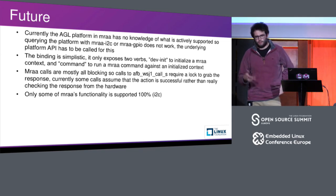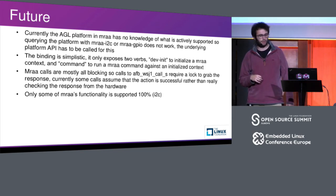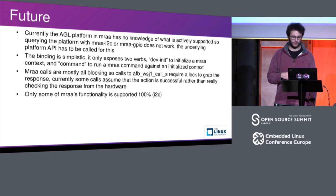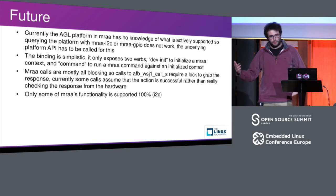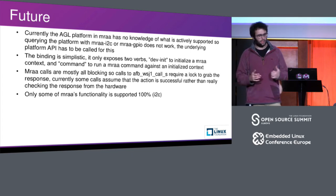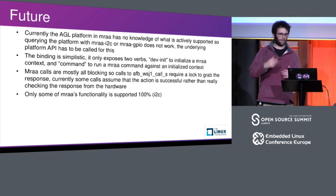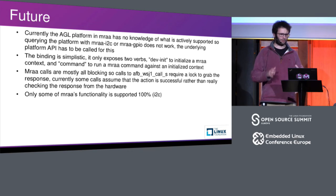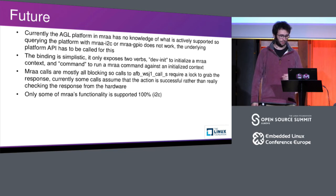One of the other things to fix is that calls to AFB are all asynchronous and we have to lock on that, which is a little bit nasty. We'll probably write a new AFB call that lets us do that directly. Also, we essentially only have I2C functionality working - we don't have the other MRAA IO protocols yet. I wanted to make one work nicely first and get feedback. As soon as I2C is working nicely, we'll move on to the other ones.